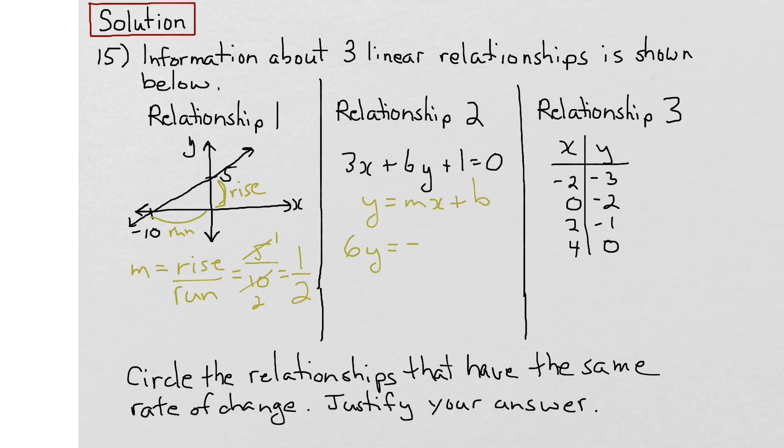Then negative 3x, the signs would change, minus 1 plus 0, which is just minus 1. Then we divide everything by 6, all terms.